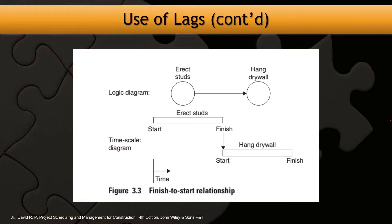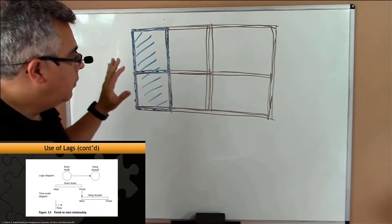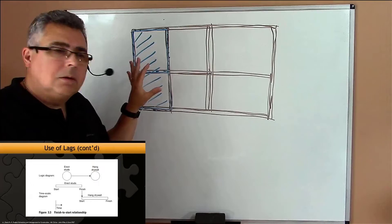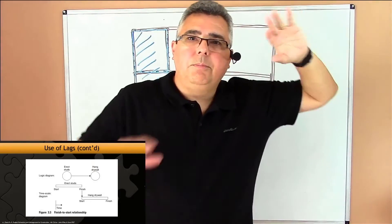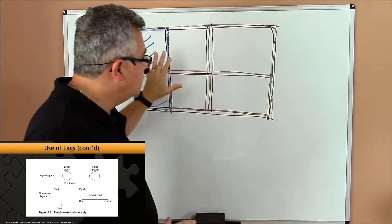You have to put the studs and then hang the drywall - that's the sequence. The most common way of planning that project is to use finish-to-start, in which you put the stud first. So you finish the frame - if you have a house or a building or several floors, you can finish the frame.